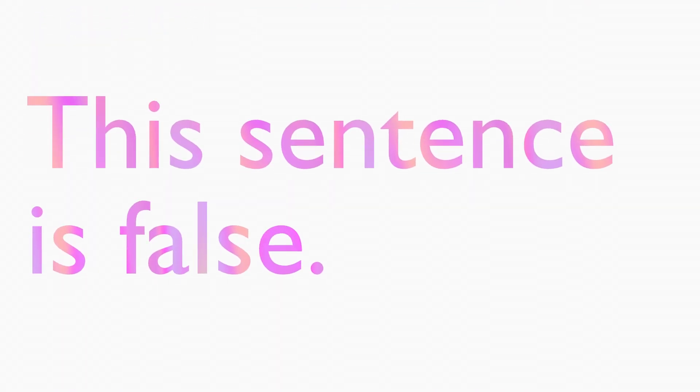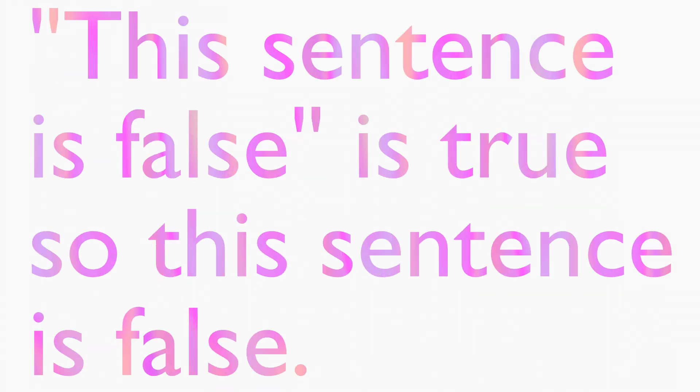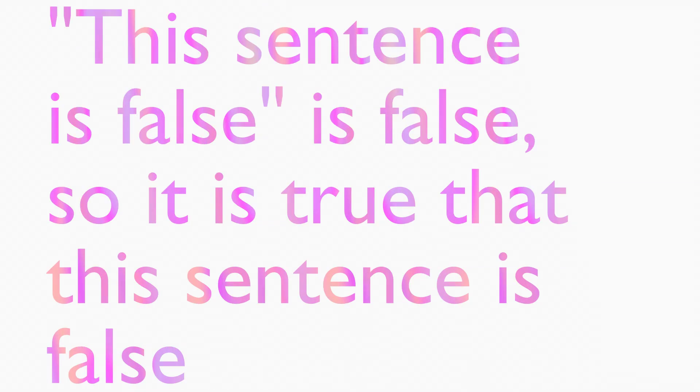So here's a problem. Is a sentence like 'this sentence is false' true or false? If it were true that this sentence is false, then that sentence would have to be false. And if the sentence were false, then it would be true that this sentence is false is true. And thus the sentence would be true.